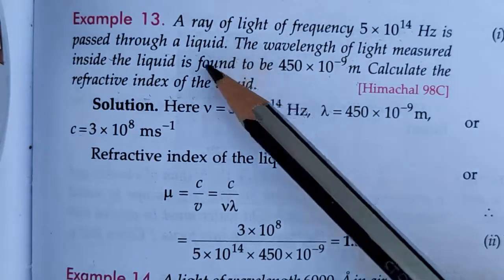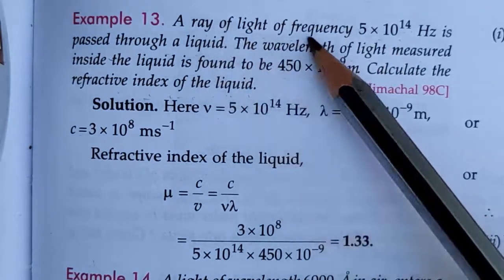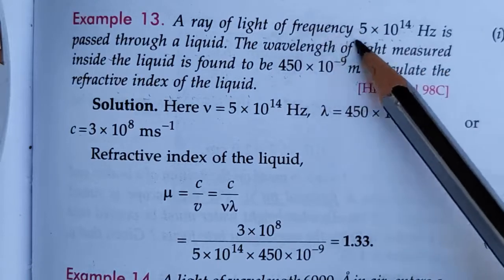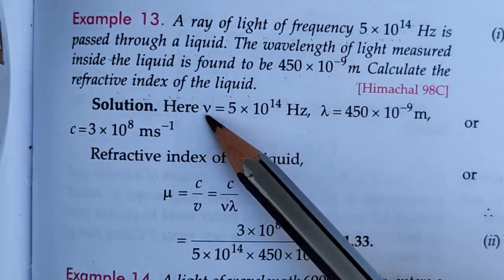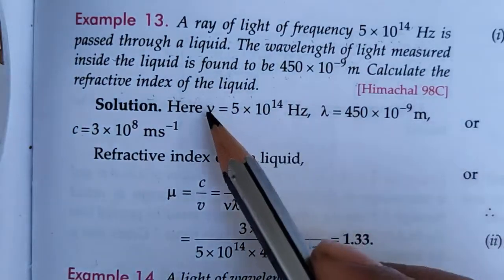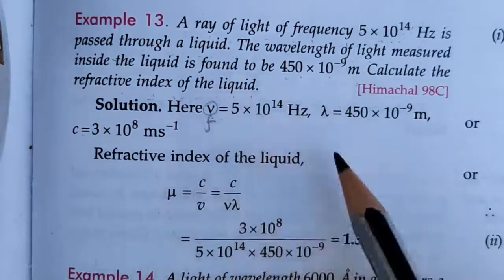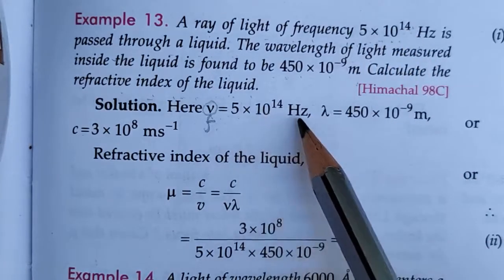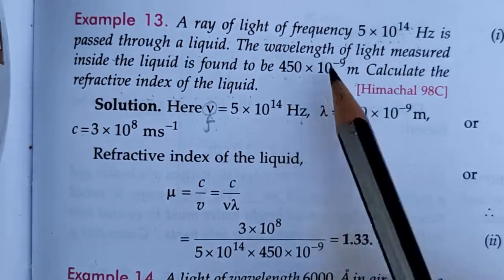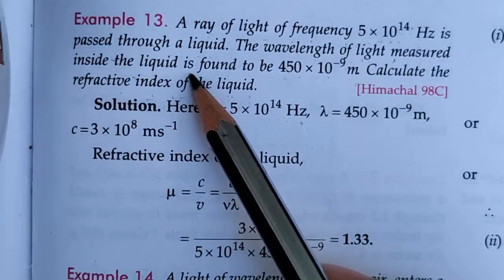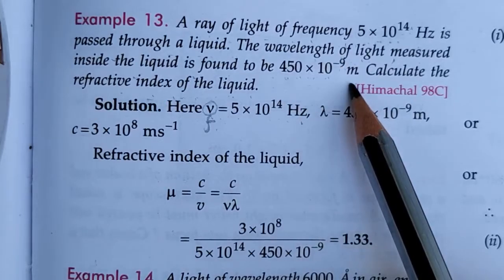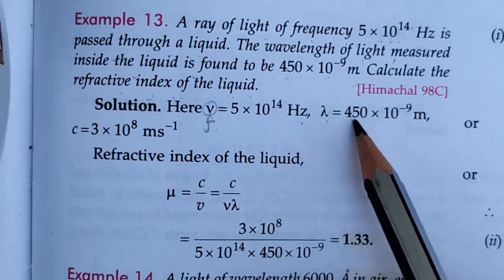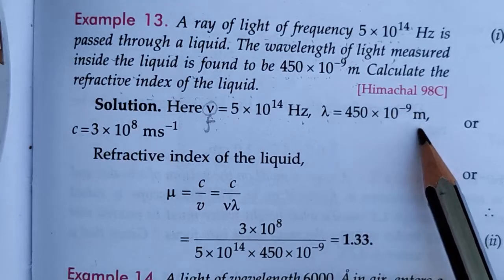Given in the question: frequency f equals 5 × 10¹⁴ Hz, and the wavelength of light inside the liquid lambda equals 450 × 10⁻⁹ meter.